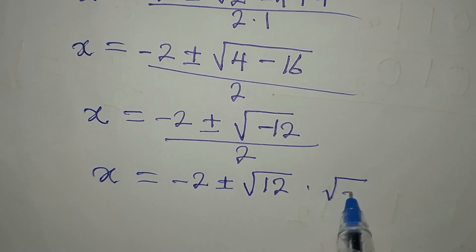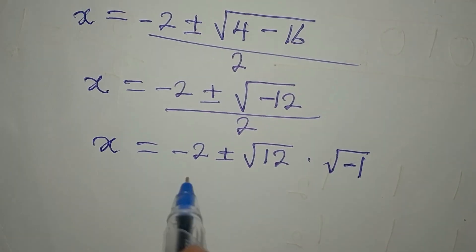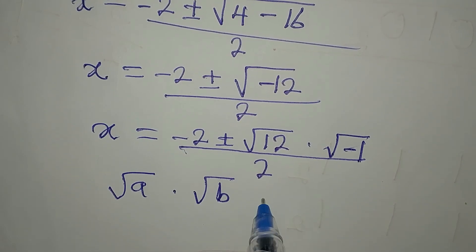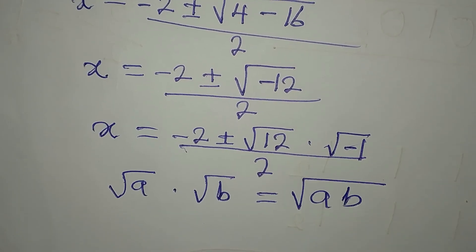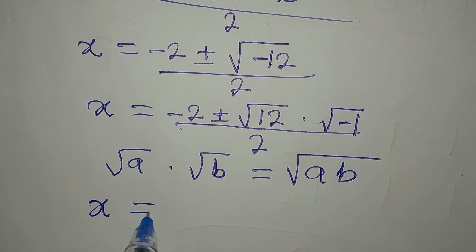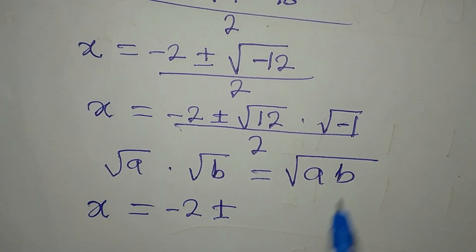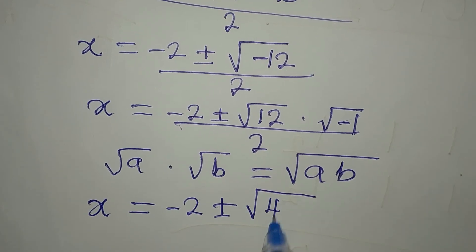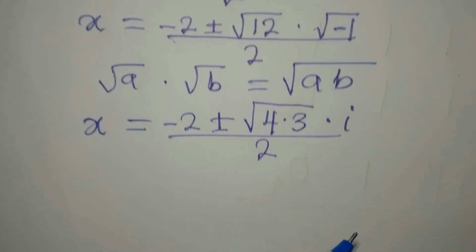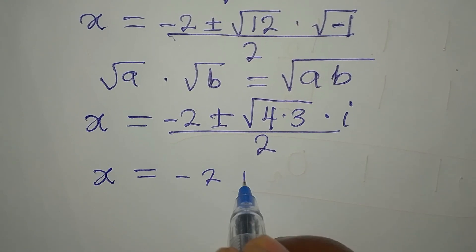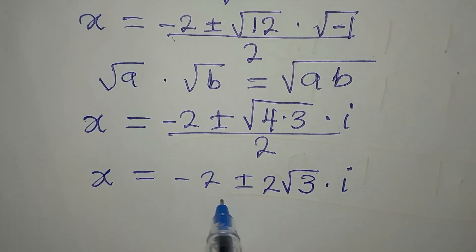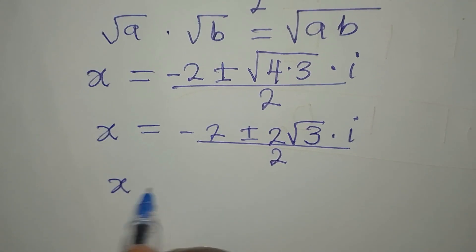We pick out the negative from inside the root. x equals negative 2 plus or minus the square root of 12 multiplied by the square root of negative 1, divided by 2. This works because the square root of a times the square root of b equals the square root of ab. We break down root 12 as root 4 times root 3, and the square root of negative 1 is i, giving 2 root 3 times i, all divided by 2.